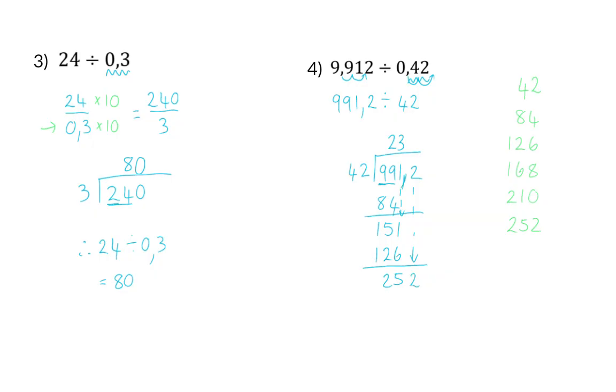Here it is important to remember that we are now at the comma, so we have to add our comma in the answer. 252 divided by 42 is exactly 6. And once I've subtracted that 252, I have a remainder of 0. And this means that 9.912 divided by 0.42 will also be 23.6.